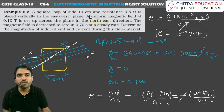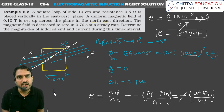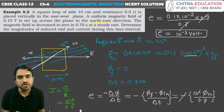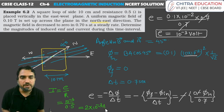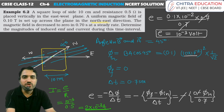Now to find the current: I = E/R = 10⁻³ divided by 0.5 ohms. So 0.5 goes up as 2, giving I = 2 × 10⁻³ ampere, which is 2 milliampere. That is the current that will flow.